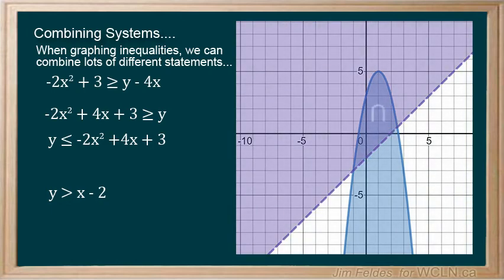And we get our intersection of common values. As always, good to test a value like 0, 0 just to confirm.